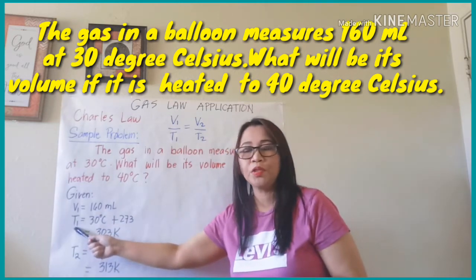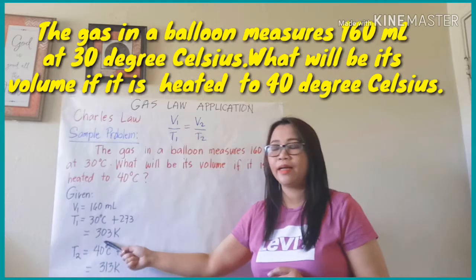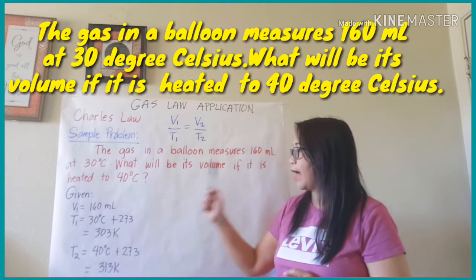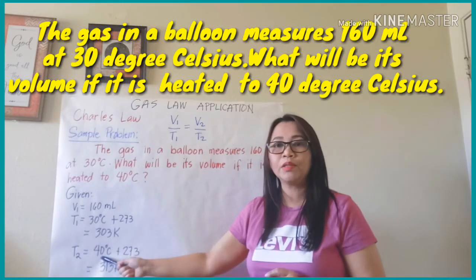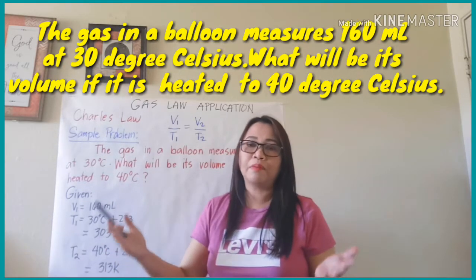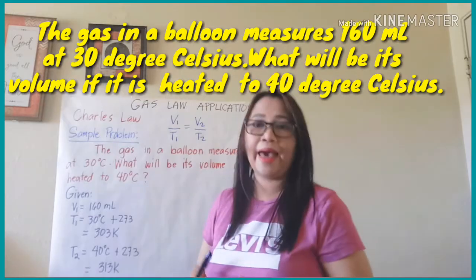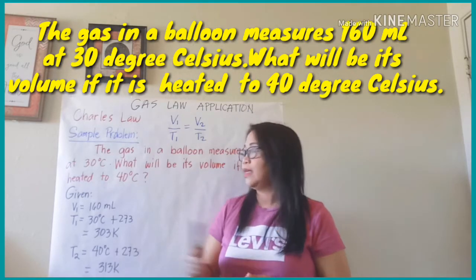And also we have the final temperature, or T2, which is equal to 40 degrees Celsius. And then again, you have to convert that in Kelvin by adding 273. So 40 plus 273 equals 313 Kelvin.